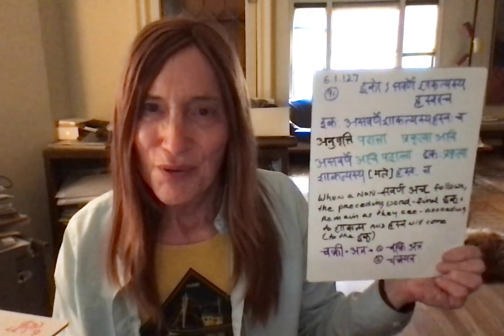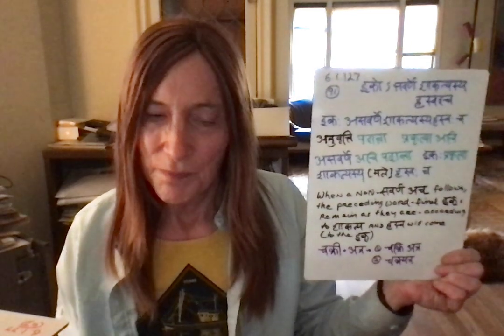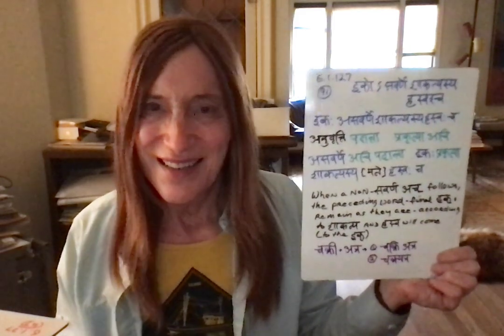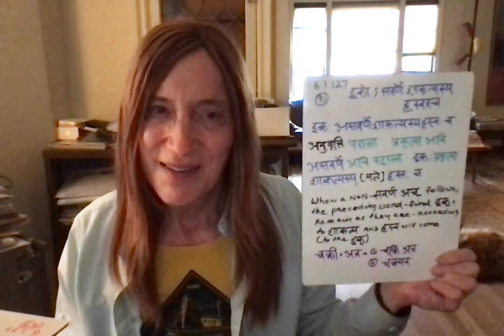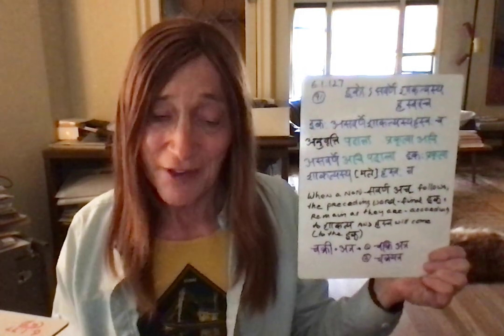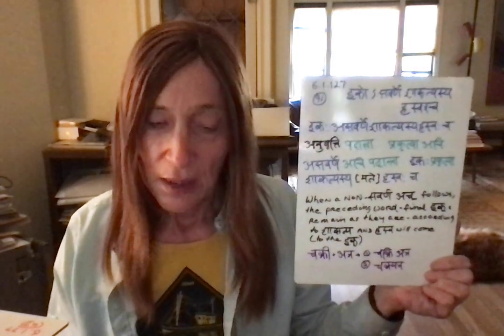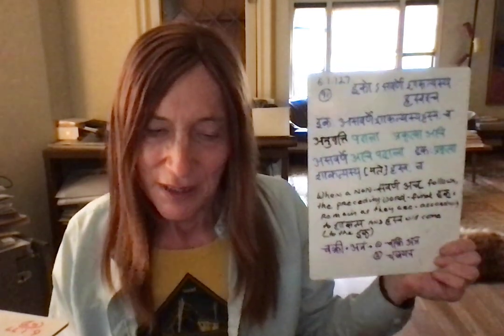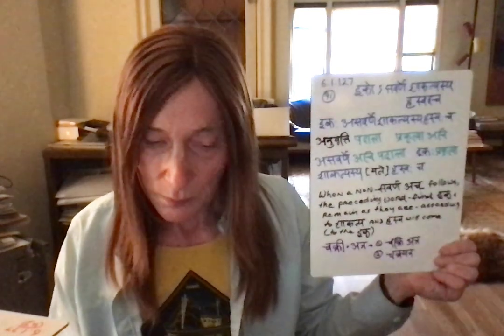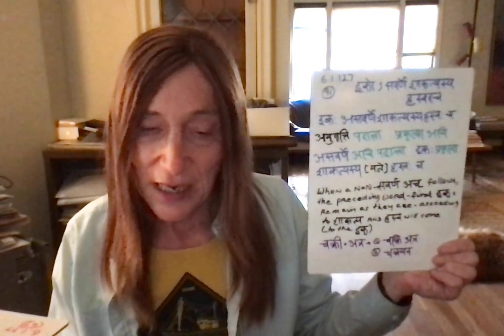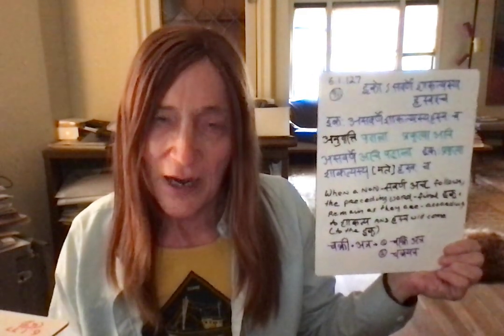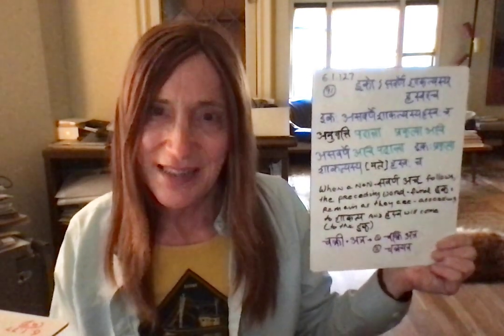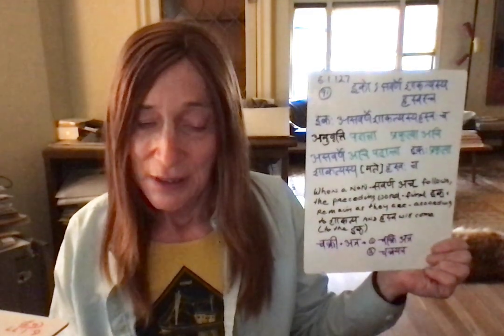We'll start with the straightforward application of this and then touch on a few interesting doubts that some commentators have had. So if we take chakri with a dirgha i and follow it with atra — atra being an acch — then we have an acch with a following word-final ikh i. By this sutra, taken as optional, we get two options.